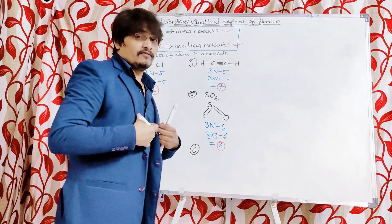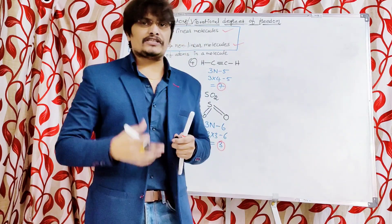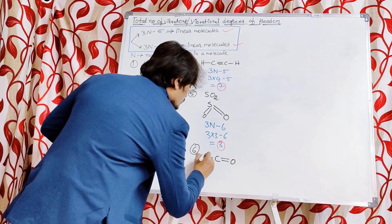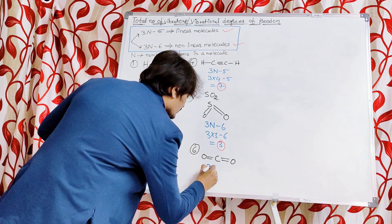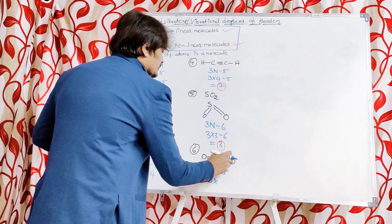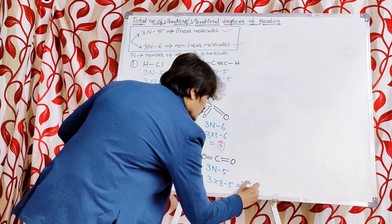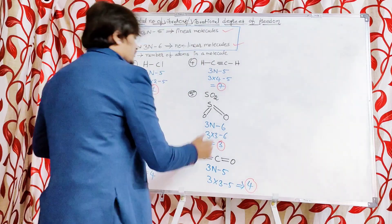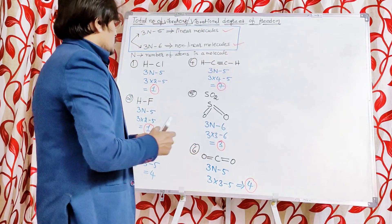Let us take another example: carbon dioxide, CO₂. To know whether the molecule is linear or nonlinear we write its structure: O=C=O. Based upon that structure we can say it is a linear molecule. Since it is linear, the formula 3N minus 5 is applicable. There are 3 atoms, so 3 into 3 minus 5 equals 9 minus 5 equals 4. So 4 vibrational degrees of freedom are possible for CO₂ when irradiated with IR radiation.